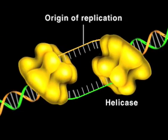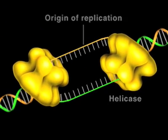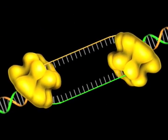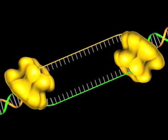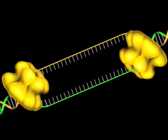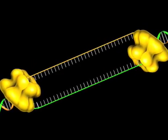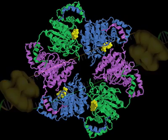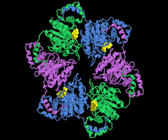Helicases separate nucleic acid duplexes into their component strands using energy from ATP hydrolysis. The crystal structure of this DNA helicase from bacteriophage T7 reveals a hexagonal arrangement of six identical subunits.